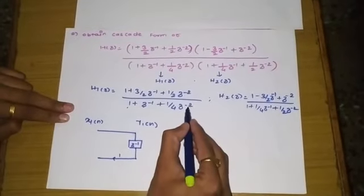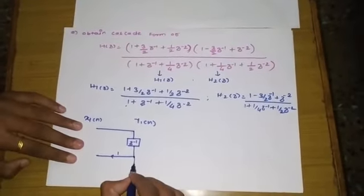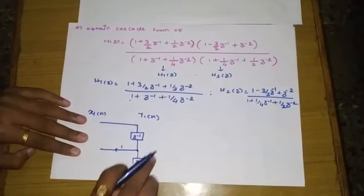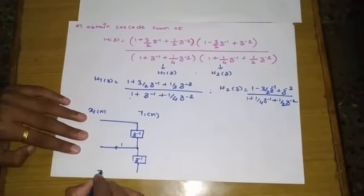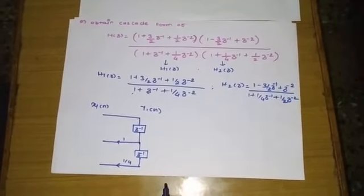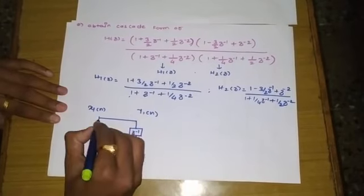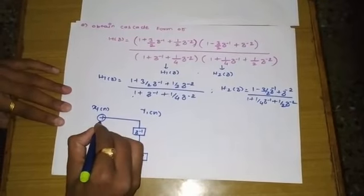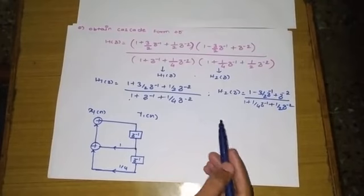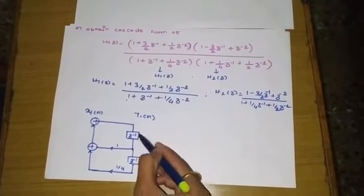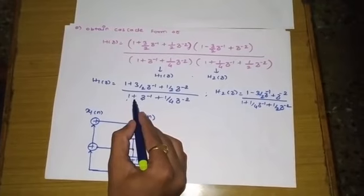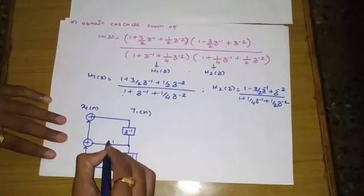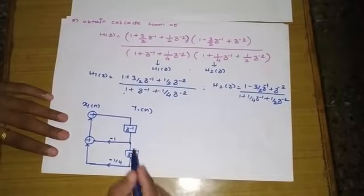The second delay element z⁻² is added by taking the same node through another delay. This node is multiplied by 1/4. We need two adders. As in direct form 2, positive pole coefficients become negative in the feedback: so the coefficients become −1 and −1/4.